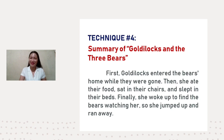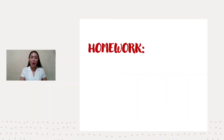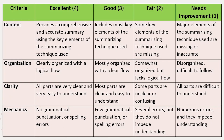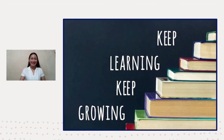For your homework, recall one of the articles, novels, or short stories you have read. Then, on a one-half crosswise paper, rewrite or summarize it using one of the previously mentioned summarizing techniques. For your summarizing activity, here are the criteria in scoring: content, organization, clarity, and mechanics. Thank you for listening. See you again in our next episode in English for Academic and Professional Purposes. Keep learning, keep growing. Bye!